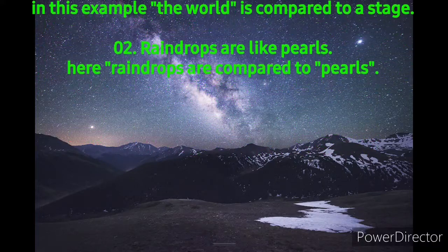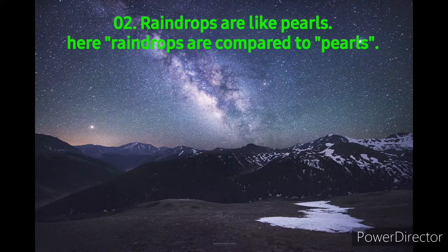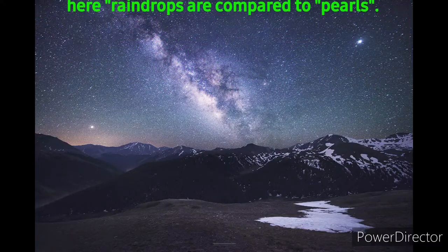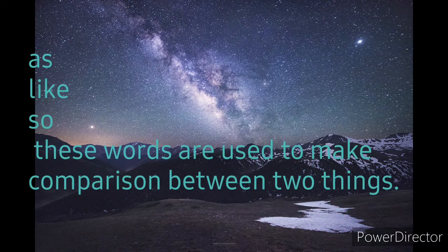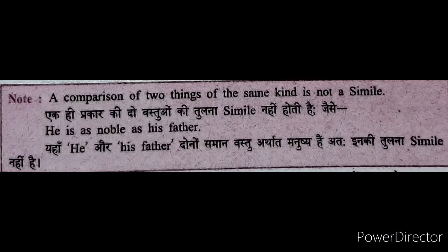So simile is that figure of speech where two things of different kinds are compared and they have at least one point in common, and words like 'as', 'like', or 'so' are used for comparison. One important point to note: we cannot compare two things of the same kind in a simile. For example, 'He is as noble as his father' — here both 'he' and 'his father' are the same kind of thing, both referring to human beings. So this is not a simile. For simile, there must be a difference between the two things being compared.